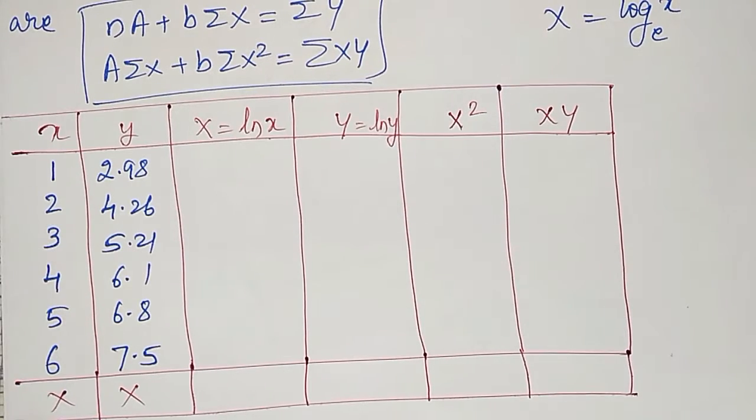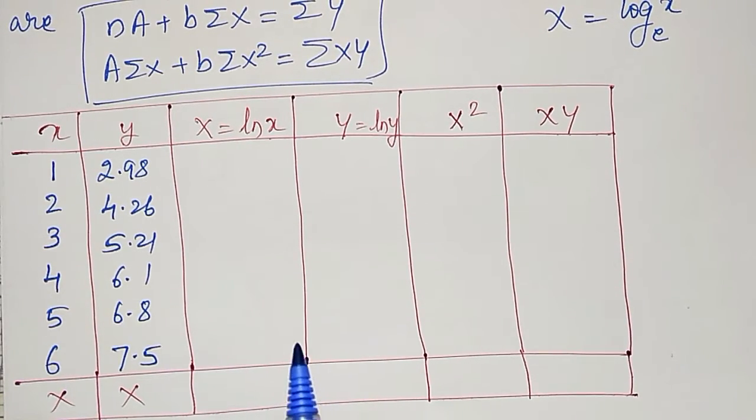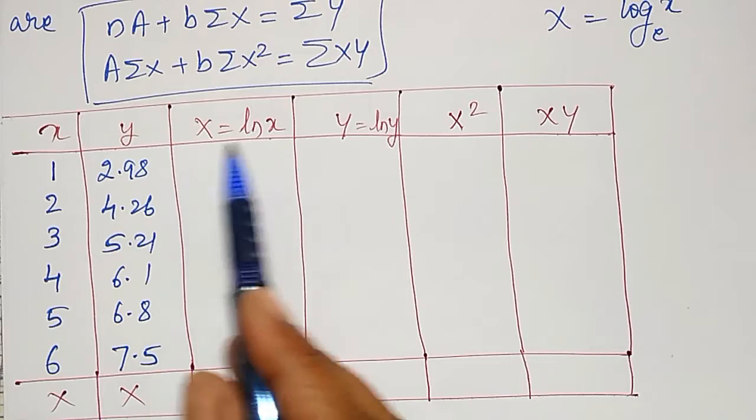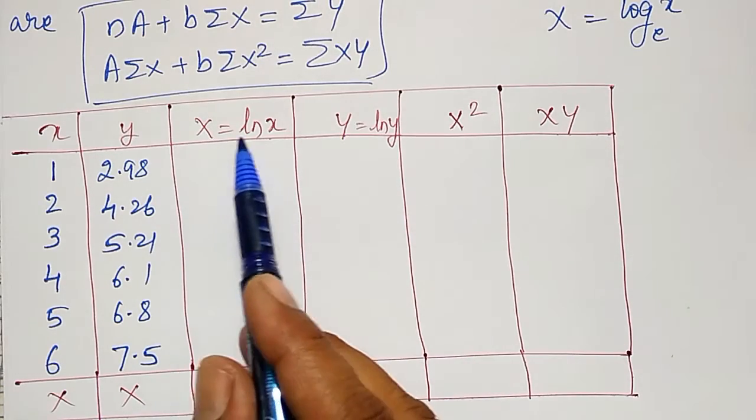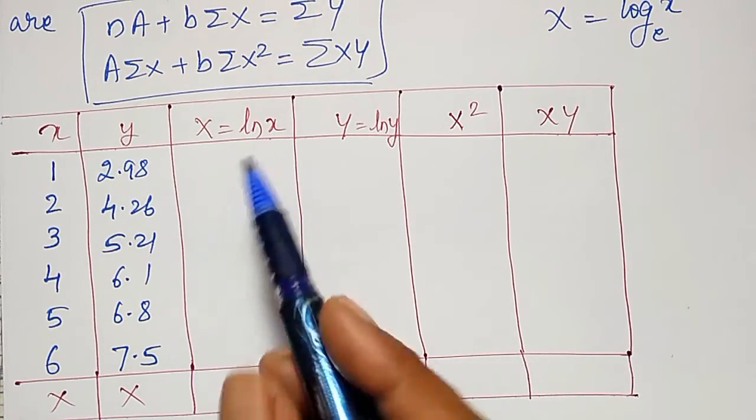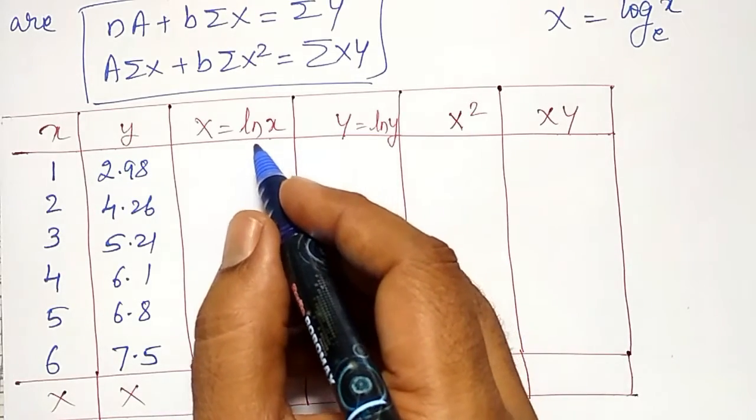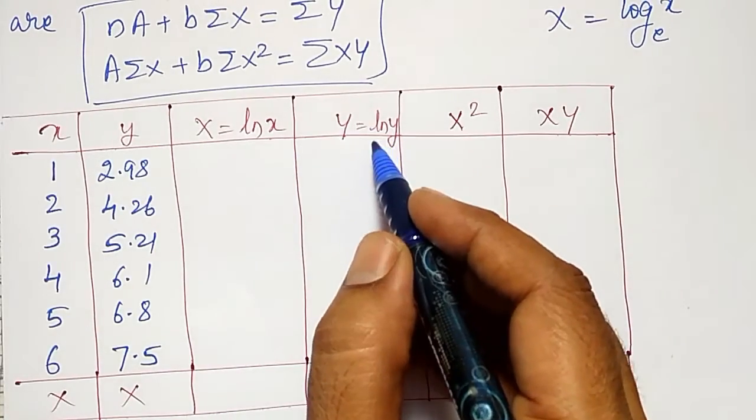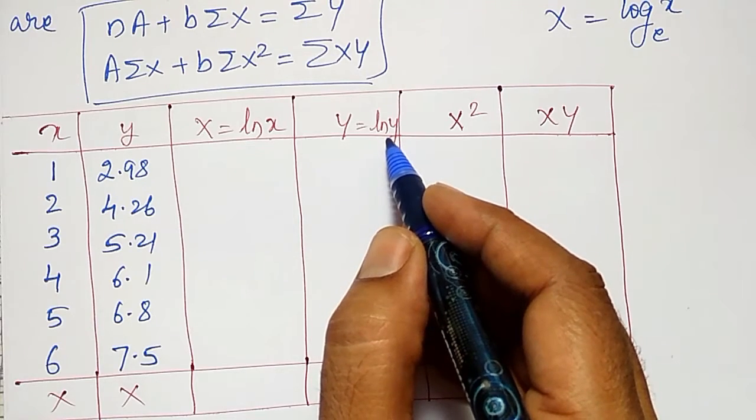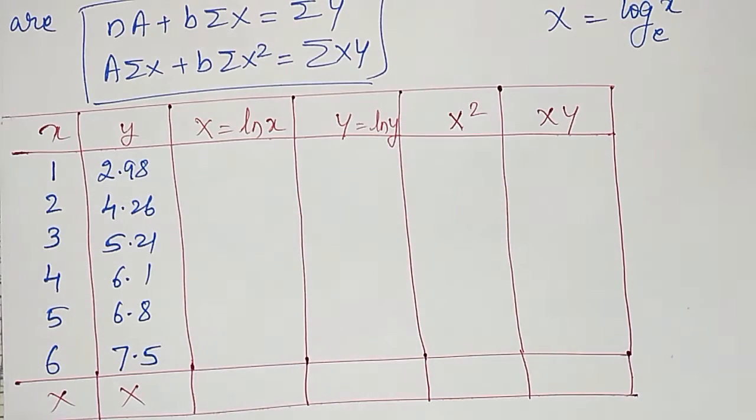Using these normal equations, I have to find the capital X, capital Y, capital XY and capital X square for the following data. I will prepare the table. According to the normal equations, I want capital X to be log x to the base e, therefore in calculator I have to use ln. Same thing for Y, I want log to the base e.